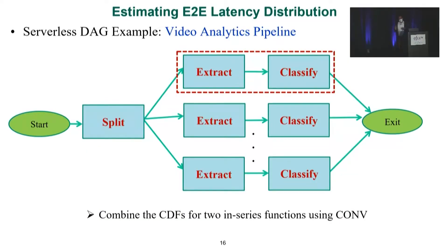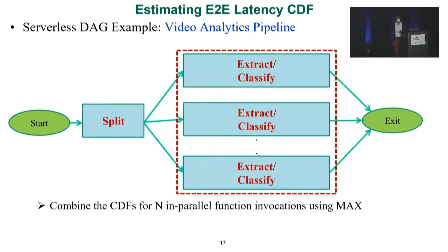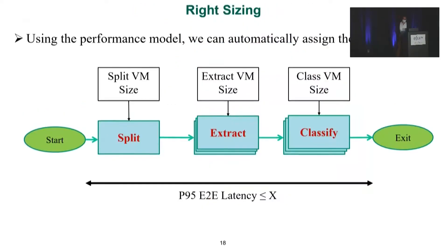Assuming I have a distribution modeling the latency of each function, I want to combine these distributions to get the end-to-end latency distribution. Whenever two functions are in series, we apply a convolution operation to combine their distributions. Whenever we have a parallel stage of N invocations, we apply a max operation to combine their distributions. Importantly, both convolution and max are sensitive to correlation — we need to consider correlation between N series functions for convolution and correlation among N parallel invocations for max. With this end-to-end performance model, I can search the space of VM sizes and select the right VM size for each function to meet a user-specified latency target.